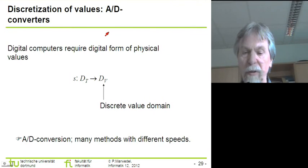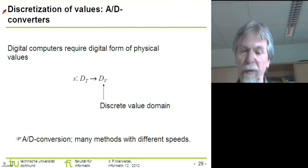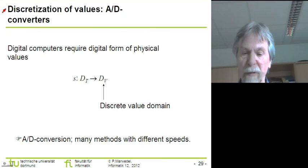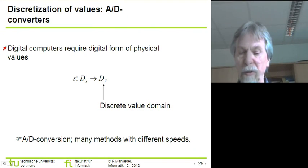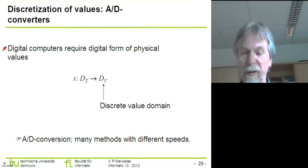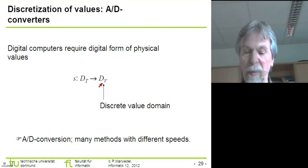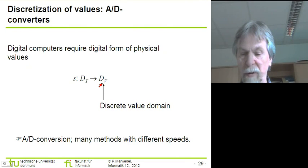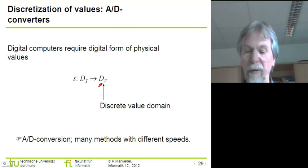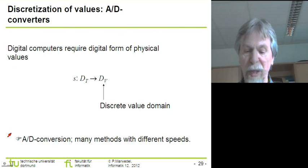This concludes the discussion of the discretization of time. Next we have to consider discretization of values. Digital computers require digital values as well, not just sequences of values, so this domain is also becoming a discrete domain. The circuit used for conversion from the analog domain to the digital domain is called an AD converter.